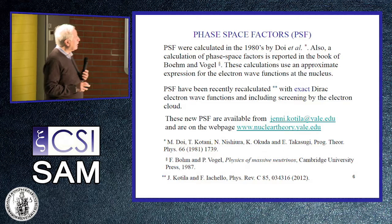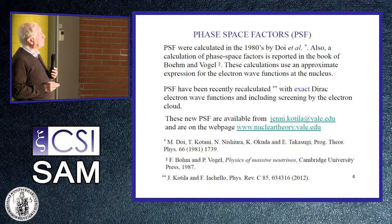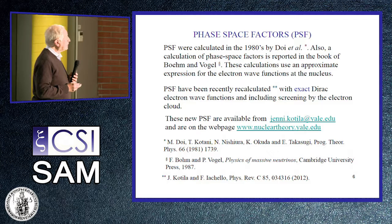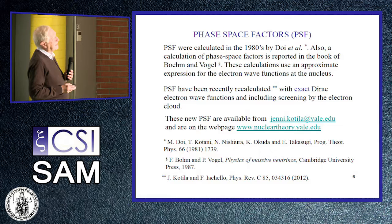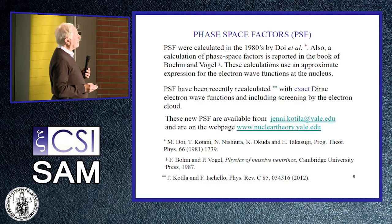In the 1980s, a Japanese group calculated some of the phase-space factors, also reported in the book of Boehm and Vogel. But these use approximate expressions for the electron wave functions at the nucleus. Recently, the phase-space factors have been recalculated with exact numerical Dirac electron wave functions including screening by the electron cloud, and these are available from Kotila and Iachello.